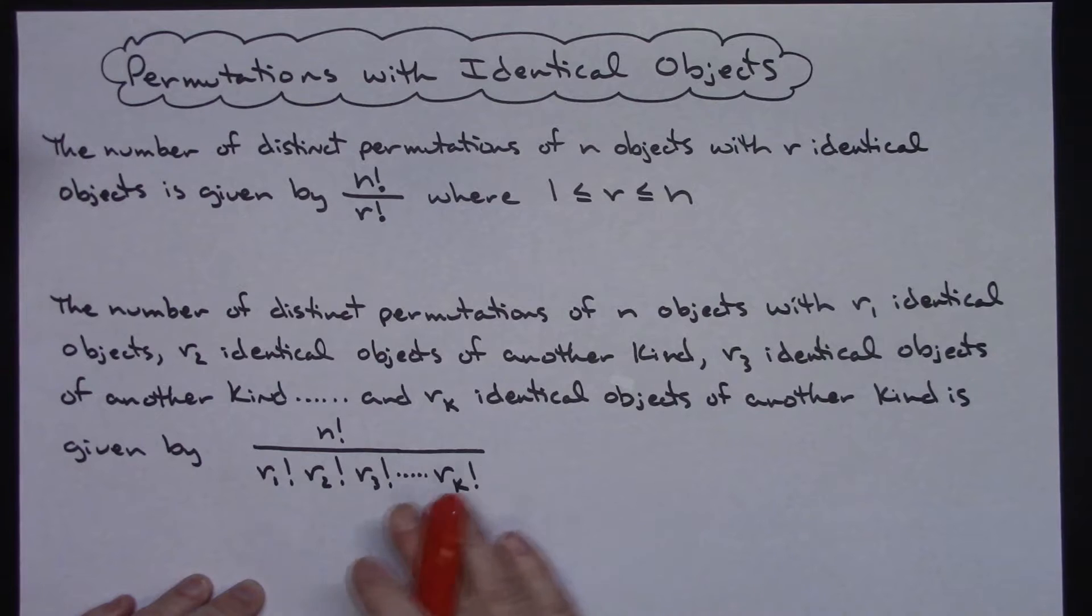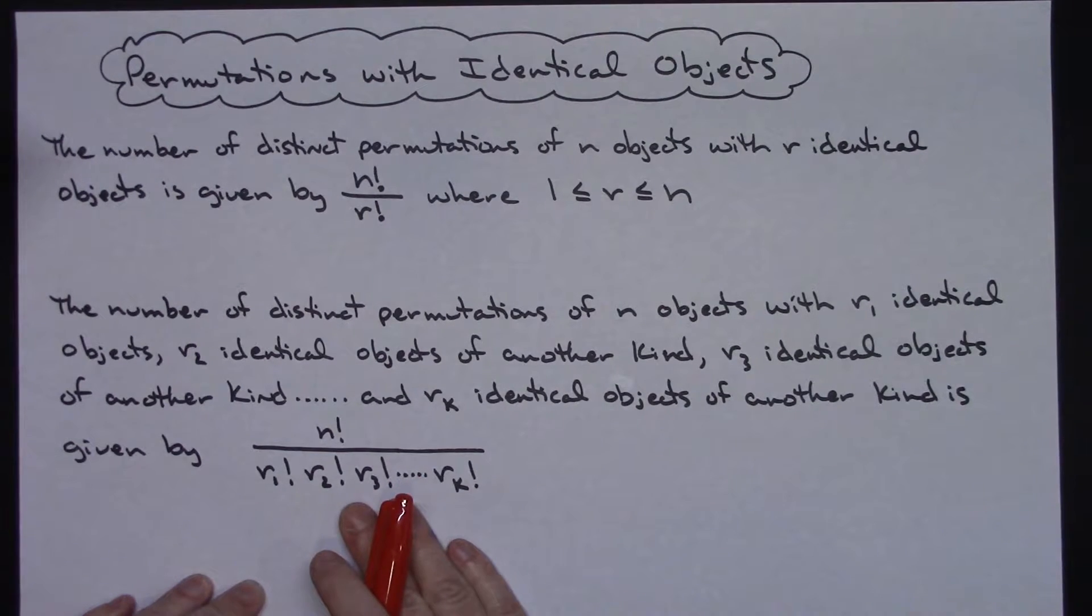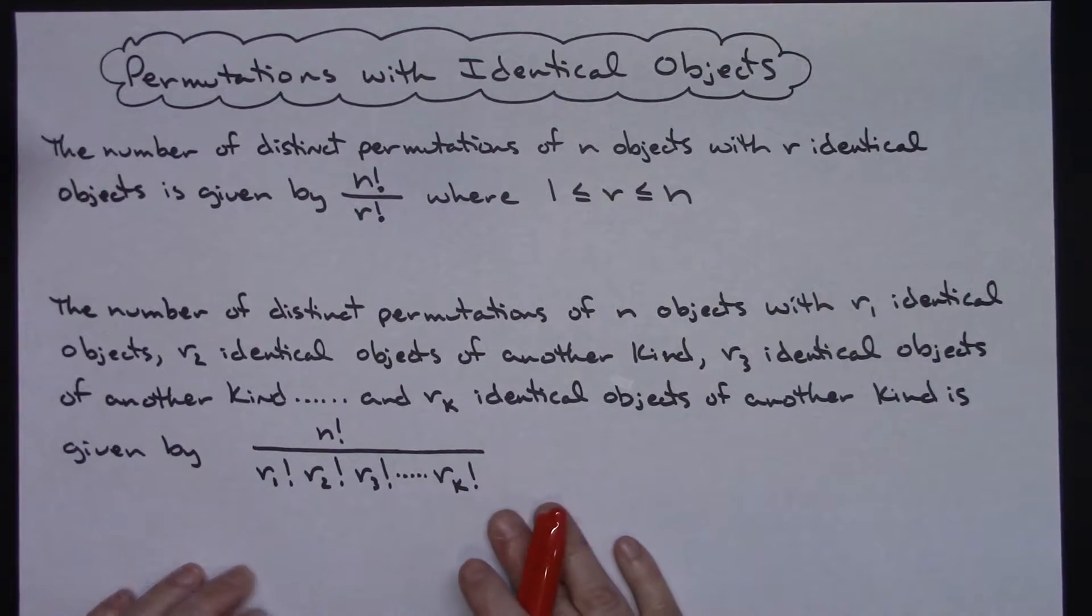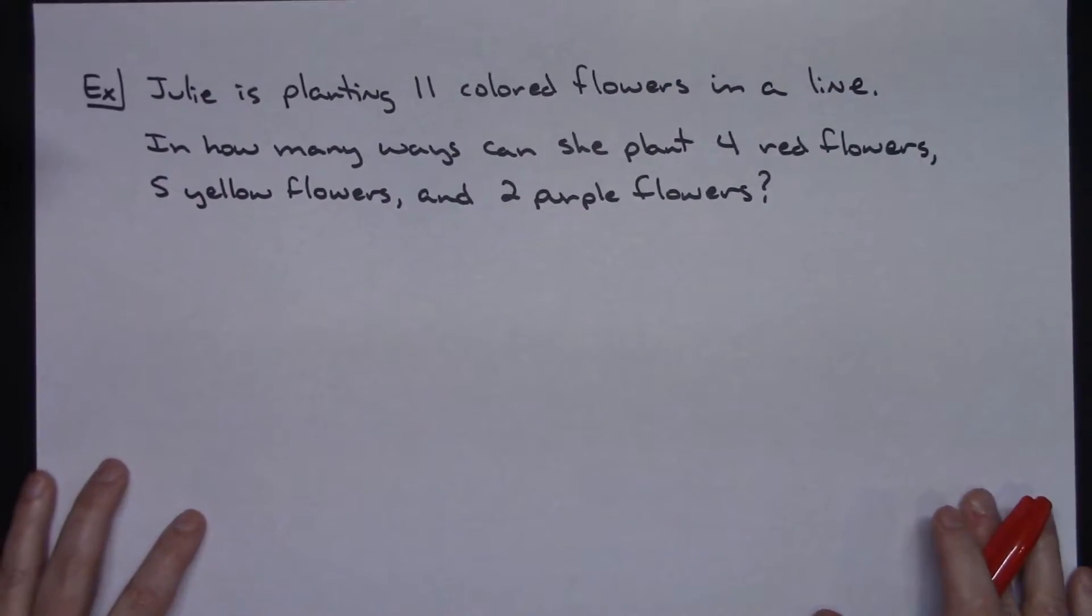So two different formulas here that we're going to be focusing on. My example is going to focus on the second one, but permutations with identical objects. Now what an example of that might look like.